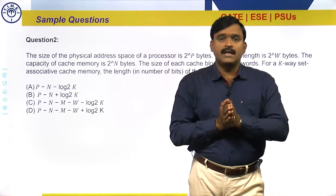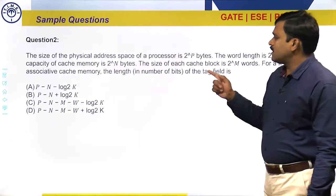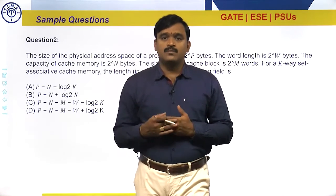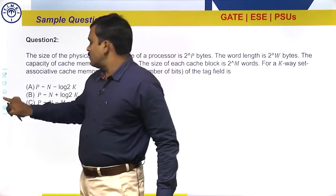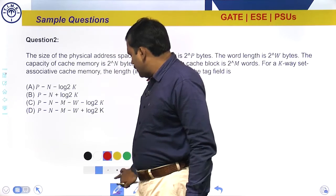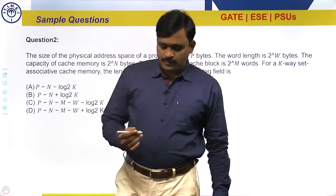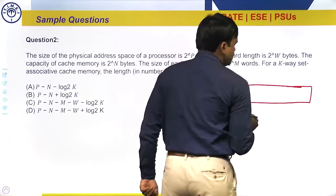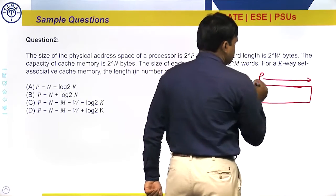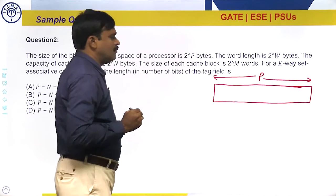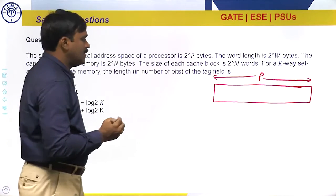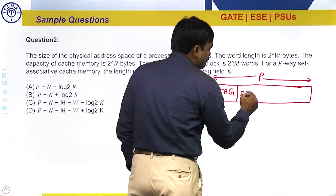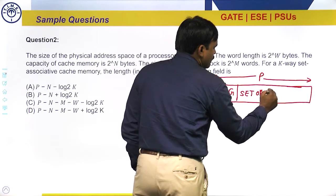In set-associative mapping, the total main memory address is divided into three parts: tag, set offset, and word offset. The size of the physical address space is 2^p bytes, meaning every physical address contains p bits — we can identify one byte of main memory using p bits. This physical address of p bits is divided into three parts: tag, followed by set offset, followed by word offset.